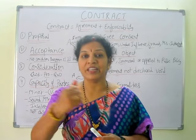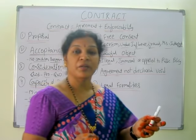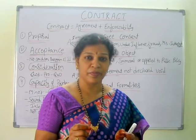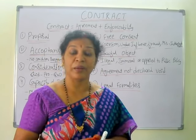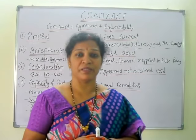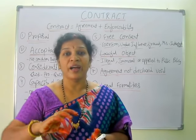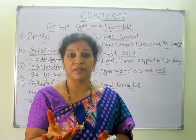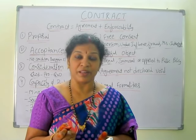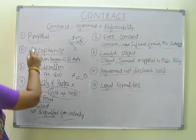In total, we have eight features of a contract. The first is proposal — for any contract, proposal is compulsory. The person keeping the proposal is called proposer, promiser, or offerer; and the person accepting is the offeree or promisee. Second is acceptance. Third is consideration — some fruitful thing is needed; no consideration, no contract. Fourth is capacity of the parties — they should not be minor, should have a sound mind, should not be insolvent, and should not be disqualified.